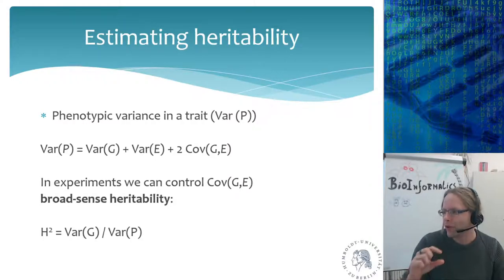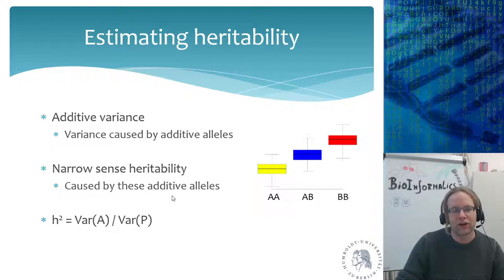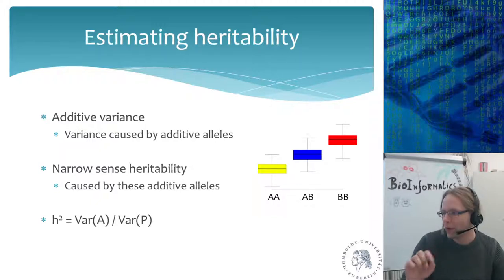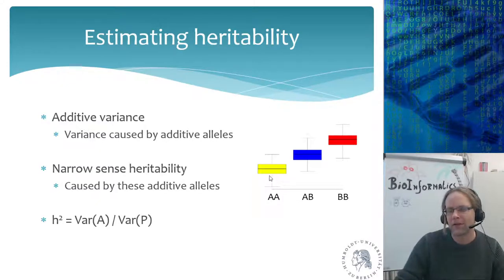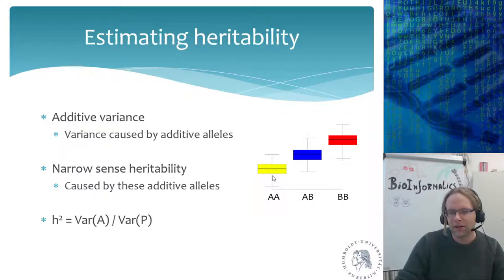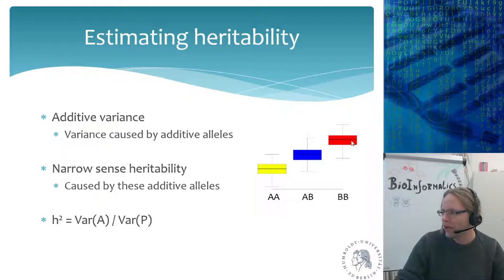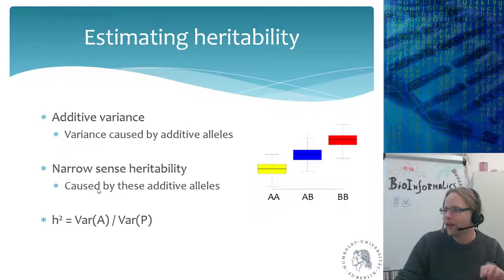When we use a capital H, we talk about broad-sense heritability. There's also the narrow-sense heritability, denoted by a small letter h², which is only the additive variance. If we have a genetic marker, you can be homozygous AA, homozygous BB, or a heterozygote. The additive heritability is when the AB group is exactly between the two homozygote parents. Additive variance is variance caused by additive alleles — this is the narrow-sense heritability.